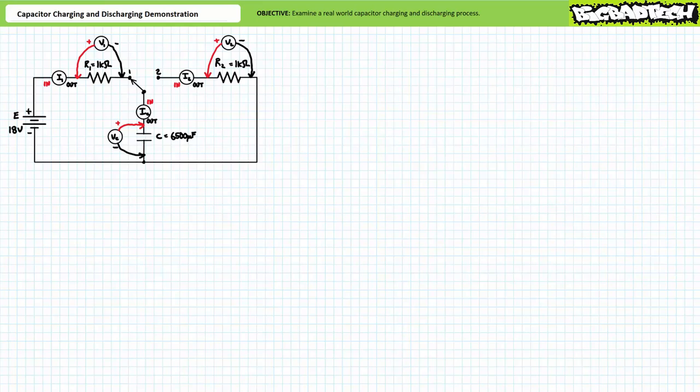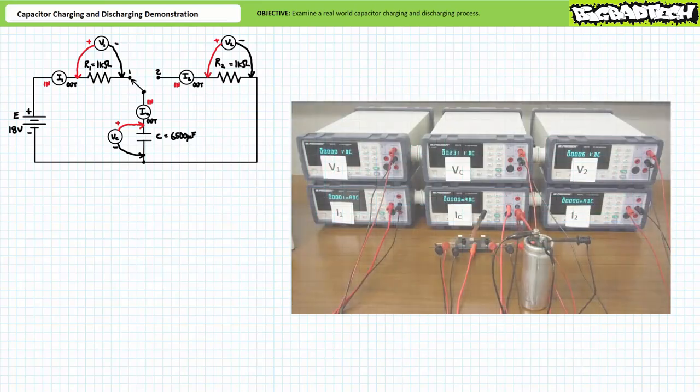Instrumentation is configured in the following fashion: Voltmeter one measures voltage across R1, positive to negative, left to right. Ammeter one measures current through R1, in and out, left to right. Voltmeter C measures voltage across the capacitor, positive to negative, top to bottom. Ammeter C measures current through the capacitor, in to out, top to bottom. Voltmeter two measures voltage across R2, positive to negative, left to right. Ammeter two measures current through R2, in to out, left to right.